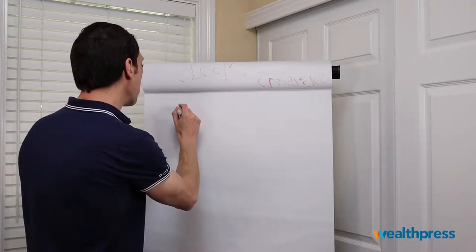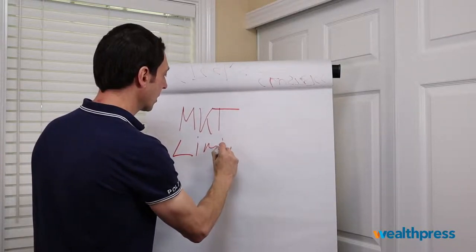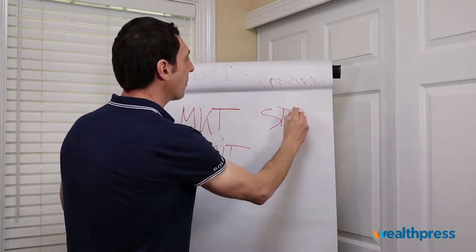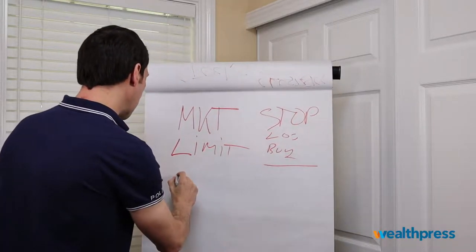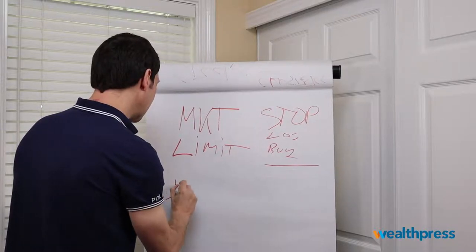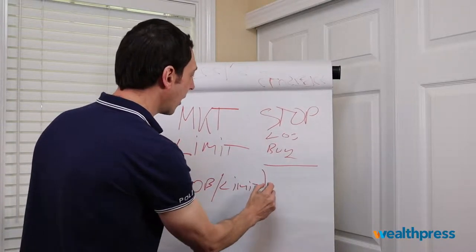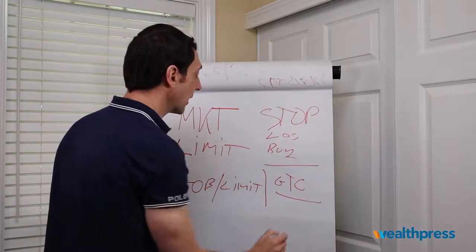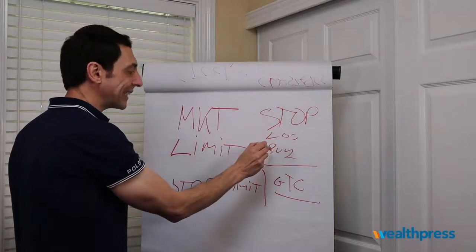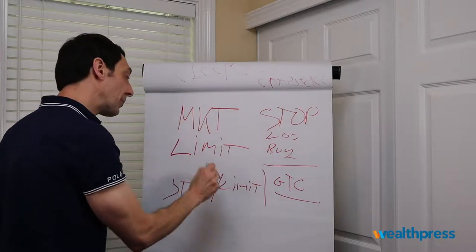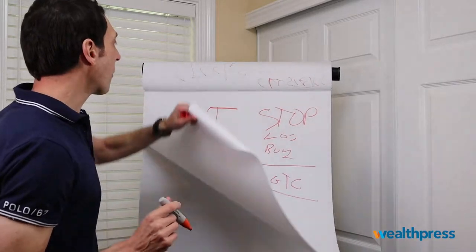So, what are we going to talk about? Market order, limit order, stop order — stop loss and buy stop — and then we're going to talk about a stop limit order, and then we'll cap things off with a GTC order. So we've got the market order, the limit order, the stop order for stop loss protection, the buy stop for entries, the stop limit order, and the GTC order. We have a lot to talk about today. Let's start off with a market order.